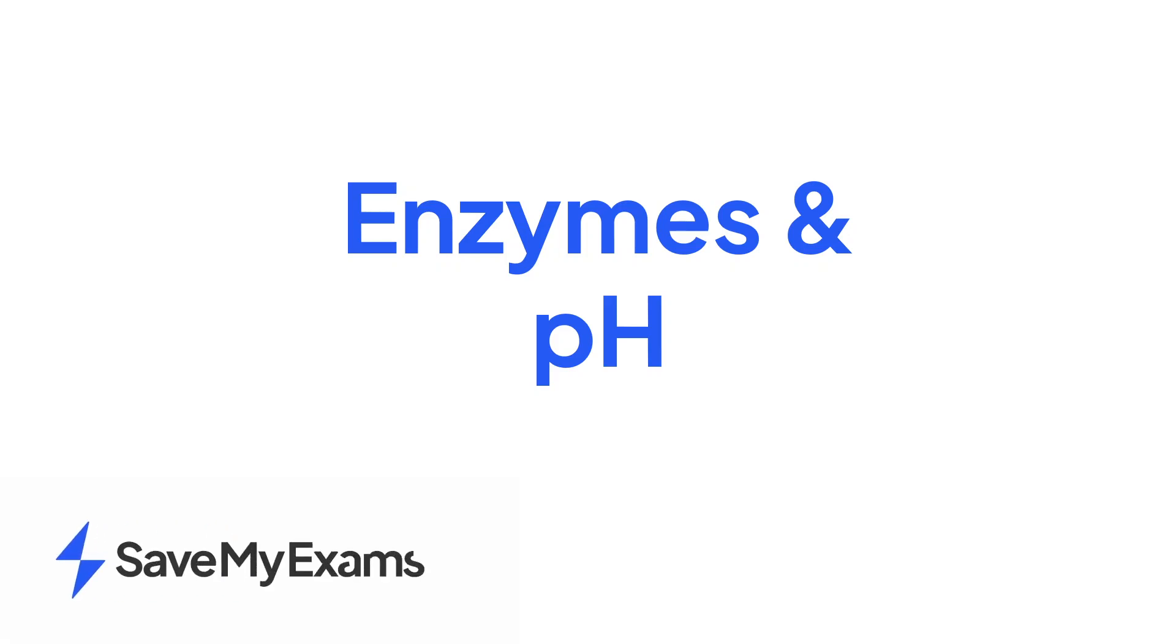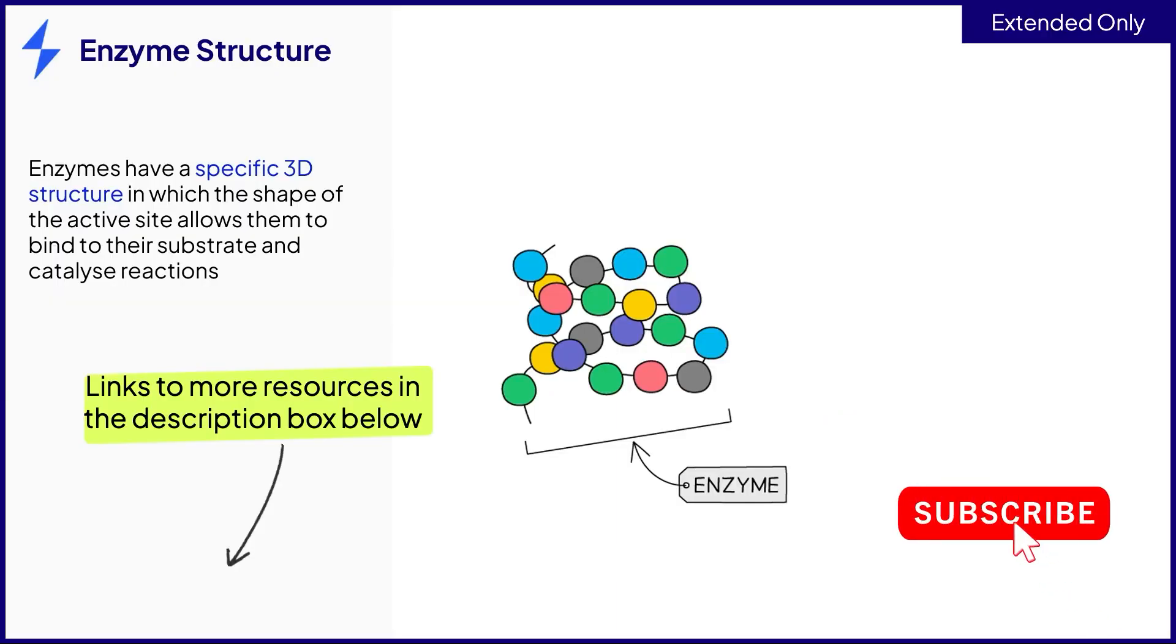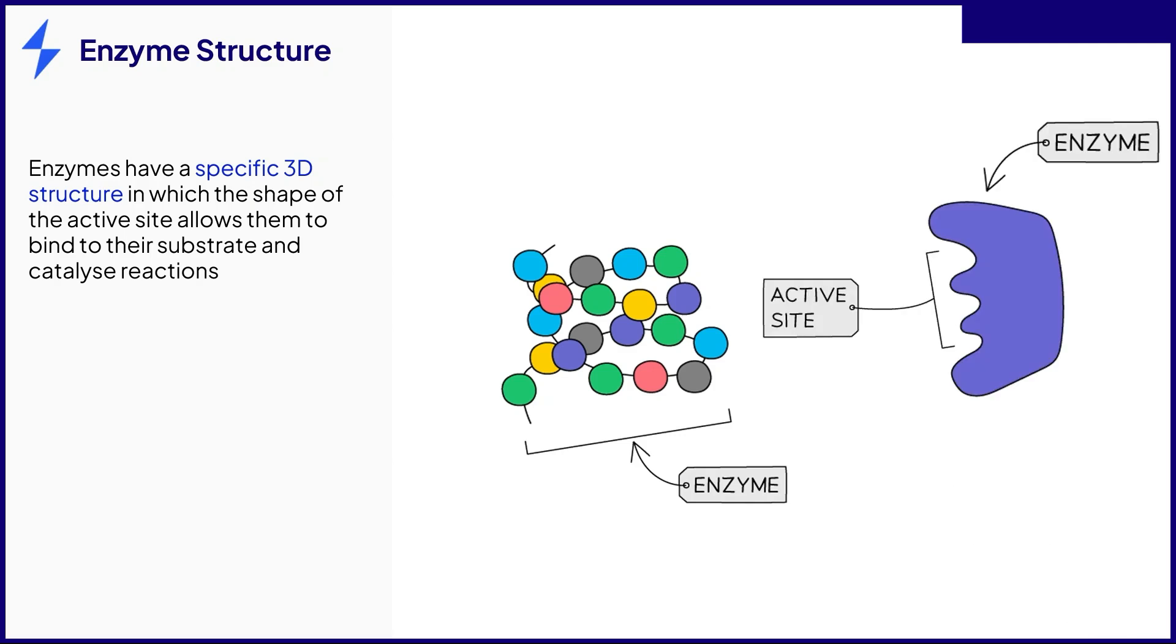This video is on the topic of how enzymes are affected by the pH of the solution they are in. The structure of an enzyme is very important for its function. Enzymes have a specific 3D structure and active site shape that allows them to fit with their substrate as part of the lock and key model.